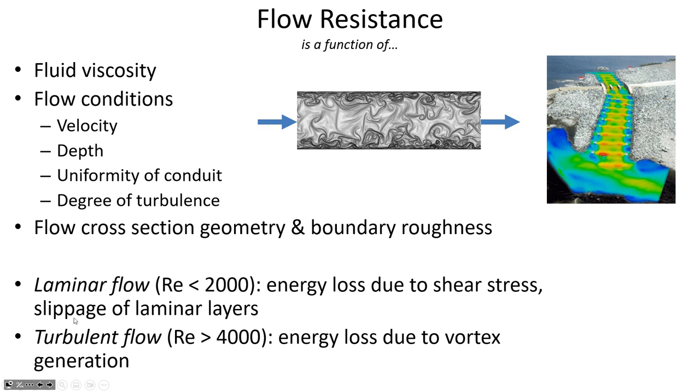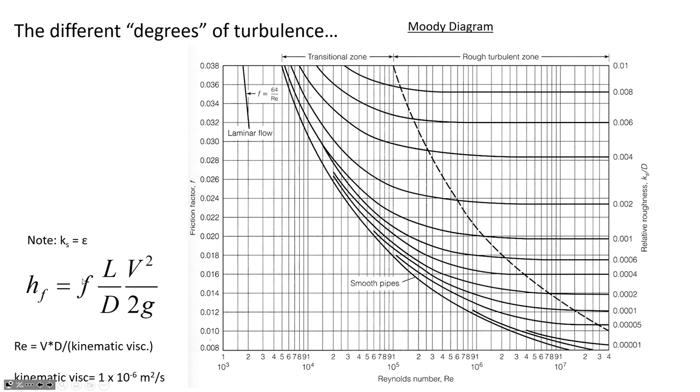So anybody here remember laminar versus turbulent flow? Is that something you learned last semester? Where the differentiation typically is thought of as anything less than a Reynolds number of 2,000 is laminar flow. Reynolds number of more than 4,000 is turbulent. What is Reynolds number? Anybody remember the formula for how you calculate Reynolds number? Velocity times diameter. Kinematic viscosity. Good. Yeah. So velocity times diameter divided by kinematic viscosity. That's right. So flow resistance depends on whether conditions are laminar and turbulent. And oftentimes we have different equations that apply depending on the flow condition. Now the Moody diagram is one that I hope that you saw last semester. I see some nodding heads.